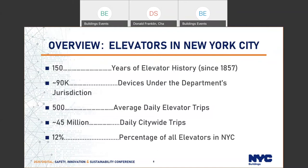Let's begin with some fun facts. It all started here in New York City in 1857 when the first elevator was installed, after Elisha Otis, the inventor of the elevator safety device, demonstrated that the elevator would stay safe even if the rope failed. This is what allowed our cities to grow vertically. We have roughly around 90,000 devices under our department's jurisdiction, each making about 500 daily trips on average, coming out to about 45 million daily trips citywide. About 12 percent of all elevators in the United States are in New York City.